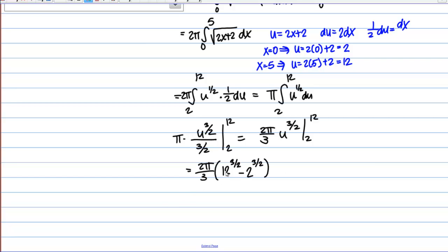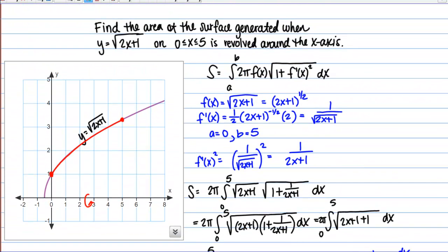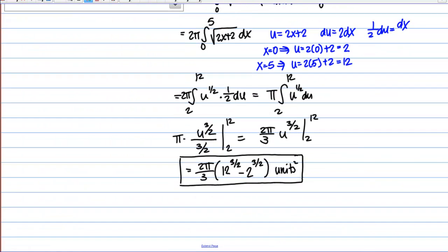Neither one of those are nice friendly numbers, so we will just leave our answer in this form. And this is the surface area, so this would have square units, whatever your units may be. Alright, so this is how you can find the surface area when a curve is revolved around the x axis.